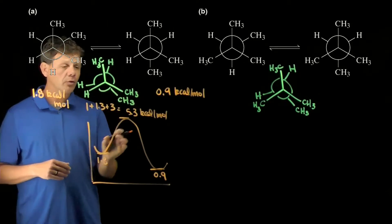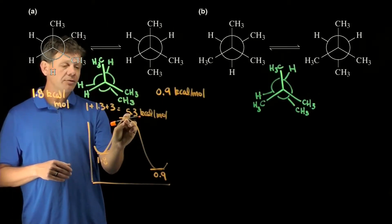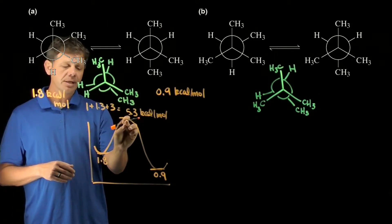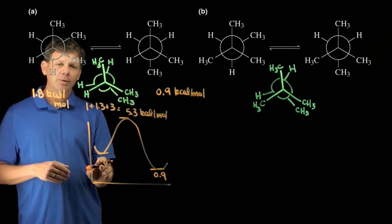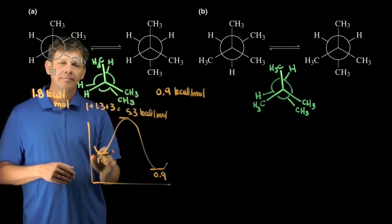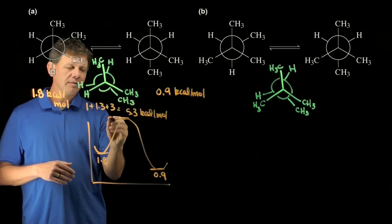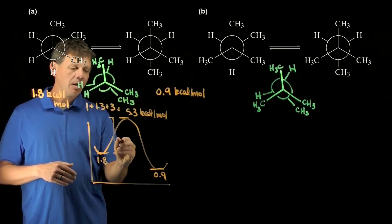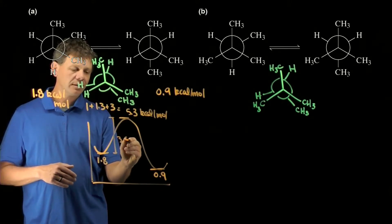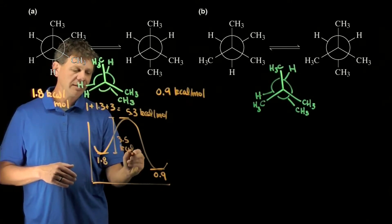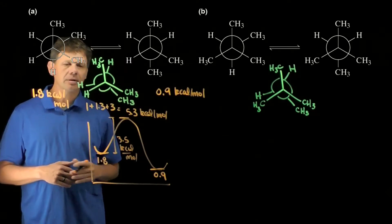Now to use the real numbers: if the energy of the transition state is 5.3 and the energy of the reactant is 1.8, then 5.3 minus 1.8 would give us an activation energy of 3.5 kilocalories per mole. That's going to be important for the next part of this question.